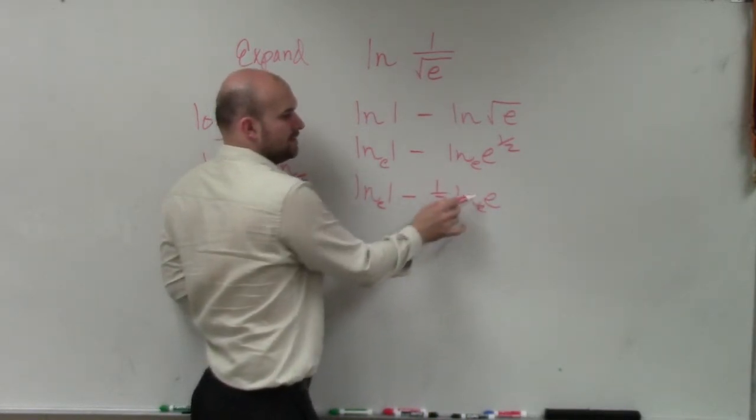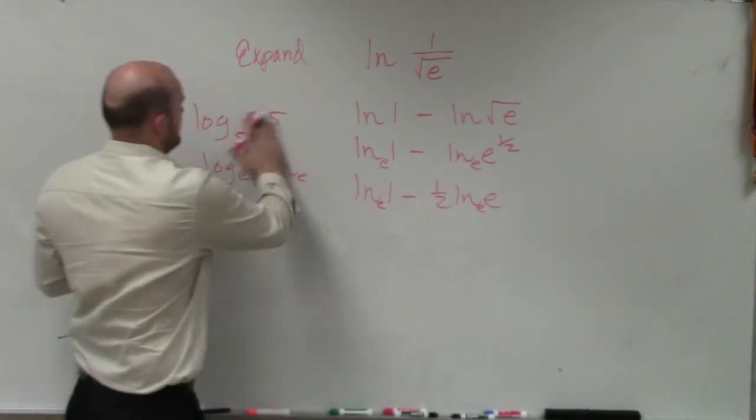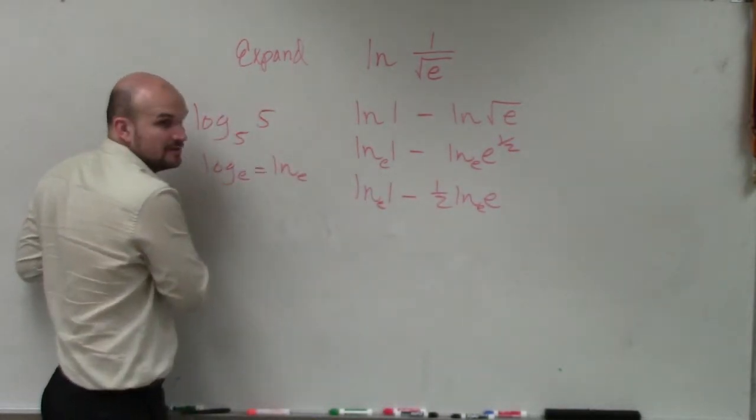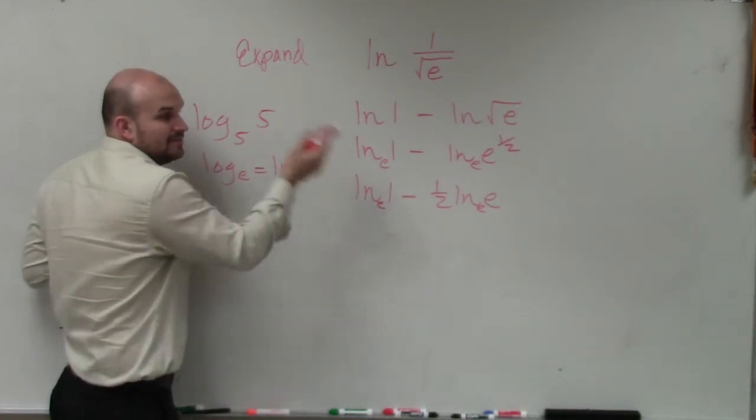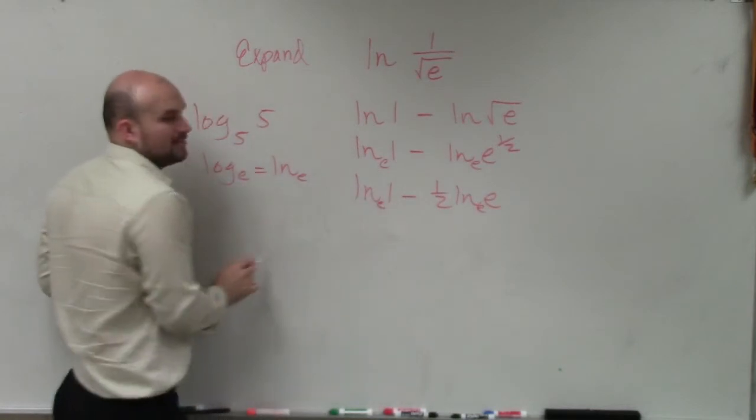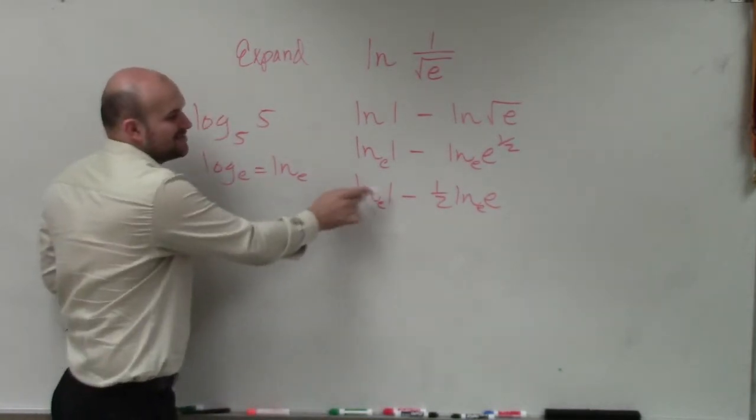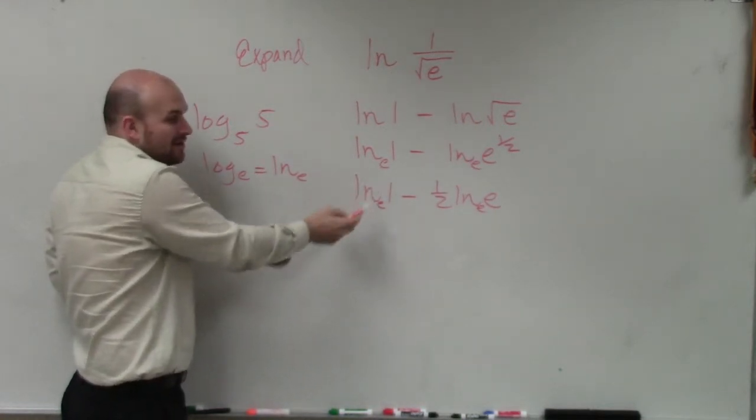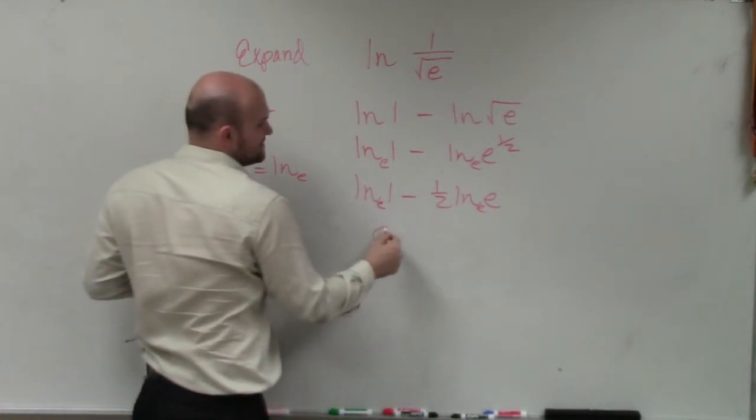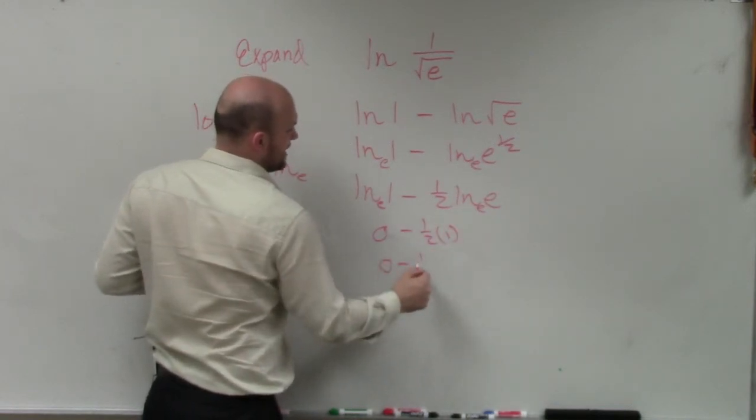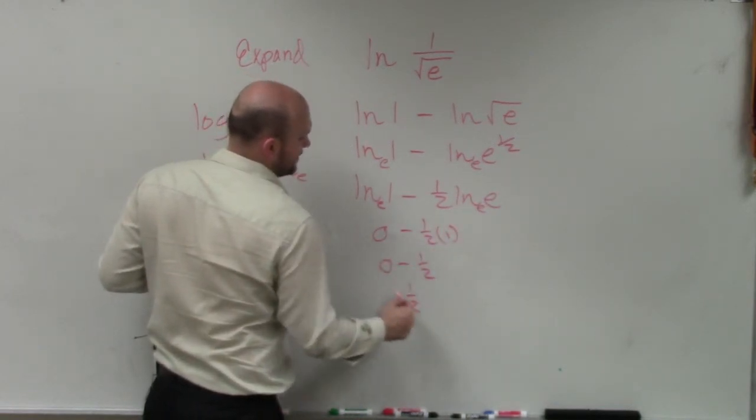ln of, when you have a logarithm of 5 raised to the 5, 5 raised to what power gives you 5? 1. What number gives you 1? 0, right? Any base raised to 0 is always going to give you 1. So you have 0 minus 1 half times 1. 0 minus 1 half equals negative 1 half.